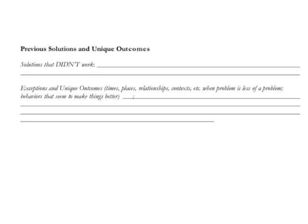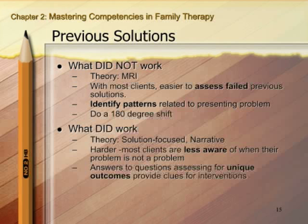In this next section we're going to assess both previous solutions that did work and that didn't work, crossing over from traditional systemic therapies into postmodern therapies. In terms of what did not work, this comes from the MRI approach — assessing what clients have been trying to do to solve the problem, why these attempts have been failing, and whether there's a common pattern. In MRI work, they would do a 180-degree shift: for example, if heaping on heavier punishments wasn't working, trying a more emotionally attuned approach instead.